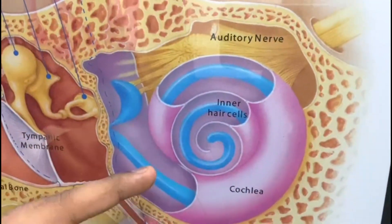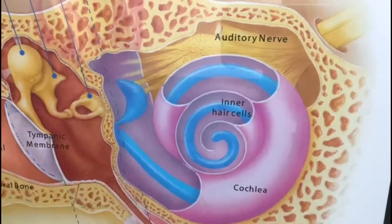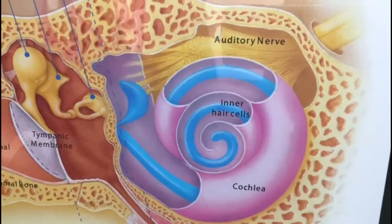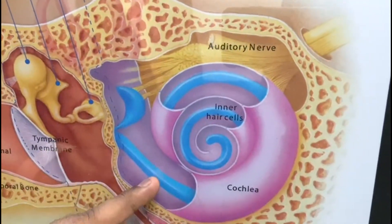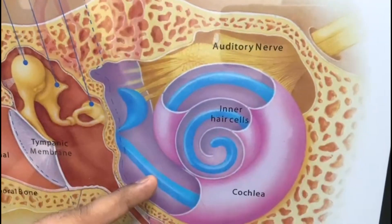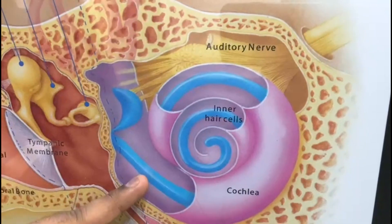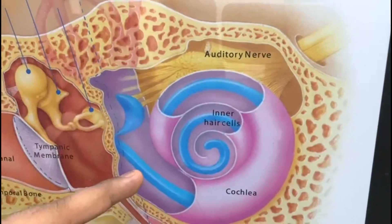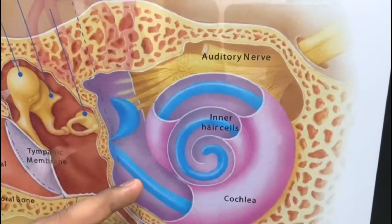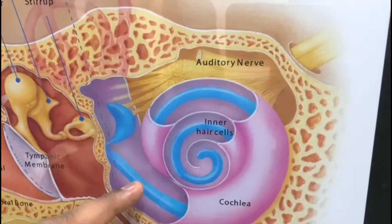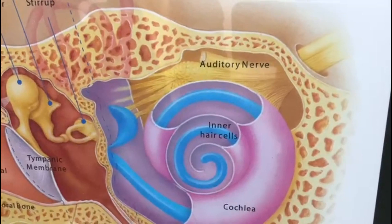An audiologist will guide you about the type of hearing loss and the percentage of hearing loss you have, and if required, will guide you to take the best suitable hearing aids depending on your hearing loss.